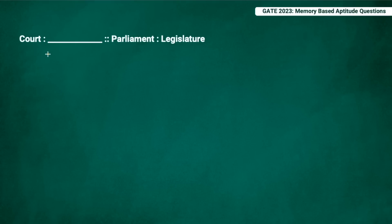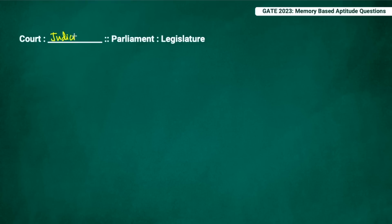The first question is from the grammar part, based on word meanings. Parliament was given for legislature, so what is court? The answer according to me should be 'judiciary.' This was very easy — other options were very different and not close to judiciary. Court works for judiciary, so that seems to be the correct answer.